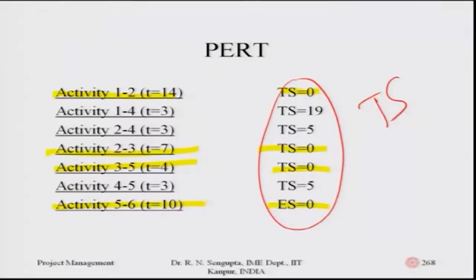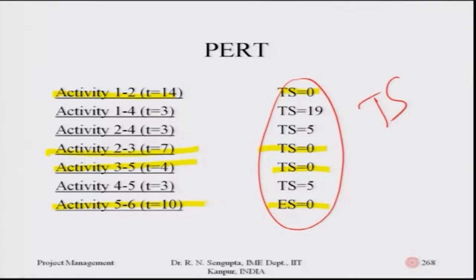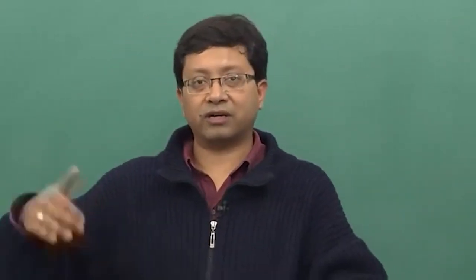Revisiting slide 270: total slack for one-two is zero and free slack is zero. For one-four, free slack is fourteen while total slack is nineteen, meaning there is a cushion available. Based on total slack and free slack you can find available cushions and decide whether to shift a job in block or in parts, as long as it does not affect the total critical path duration. Crashing is not being considered at this stage.